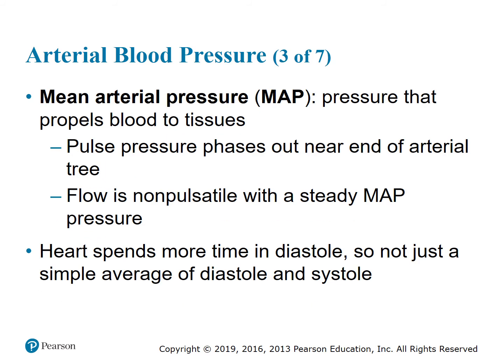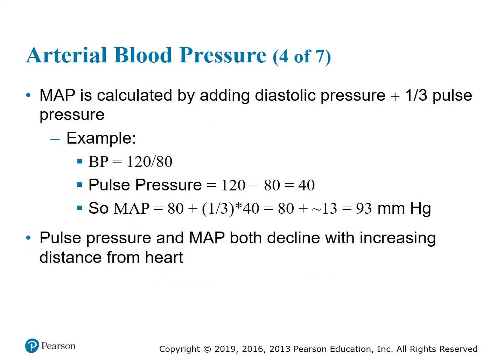Mean Arterial Pressure (MAP) is the pressure that propels blood to the tissues. The pulse pressure phases out near the end of the arterial tree and flow becomes non-pulsatile with a steady MAP. Because the heart spends more time in diastole, MAP is not a simple average. MAP is calculated as diastolic pressure plus one-third of the pulse pressure. For example, for a blood pressure of 120/80: pulse pressure = 40, so MAP = 80 + (40/3) ≈ 80 + 13 = 93 mmHg. Both pulse pressure and MAP decline with increasing distance from the heart.